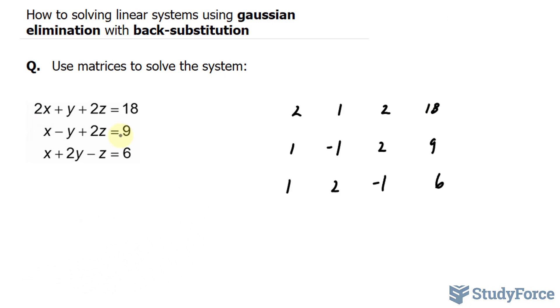Now that we have our augmented matrix, what we want to do is use matrix row operations to simplify the matrix to a row equivalent matrix in row echelon form, which means you have ones down the main diagonal from the upper left to the lower right and zeros below the ones in the first and second columns.